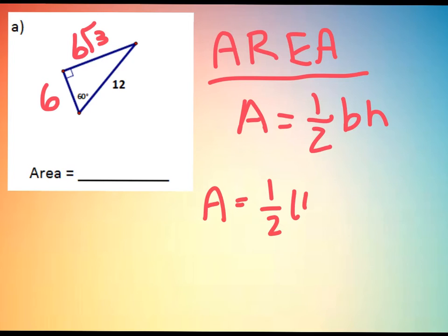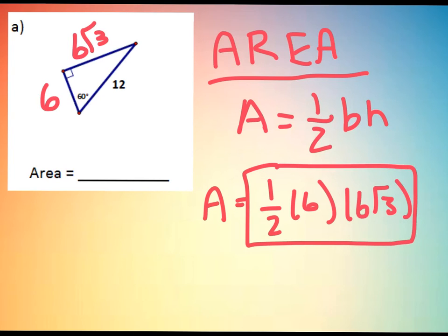one-half the base times the height. And I just simply multiply that out. They ask for an exact answer, so I'm going to leave in the root 3 where it belongs. But 6 times 6 is 36, divided by 2 is 18 root 3.